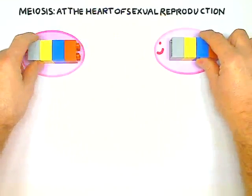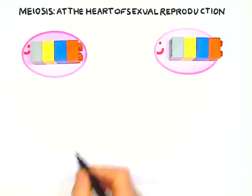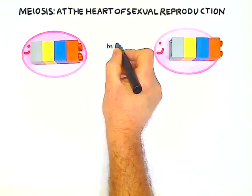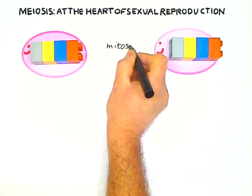This type of division happens all the time throughout life in all living tissues. It is called mitosis.